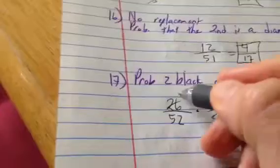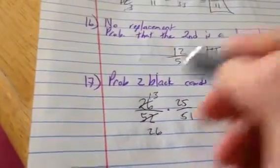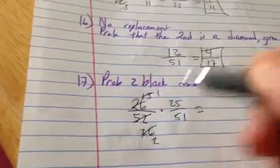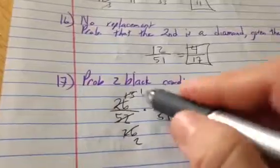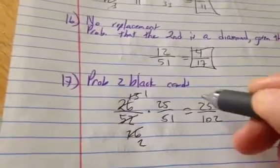oh actually here we can make this smaller, we can make that 13 and I can make that 26, which should reduce to one half, which makes sense because half the cards in the deck are black. And so now that makes it easier to multiply straight across, so that'll be 25 out of 102, and that should do it.